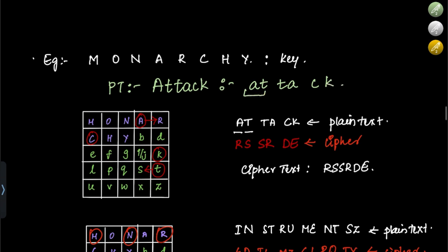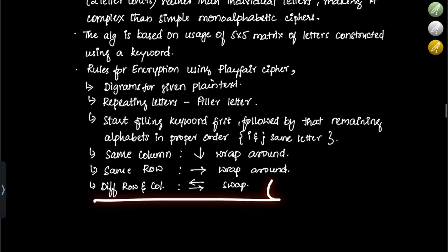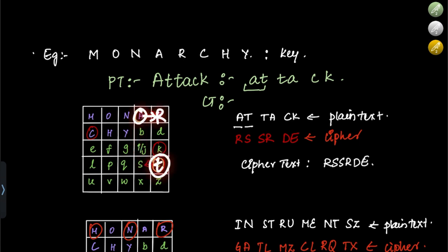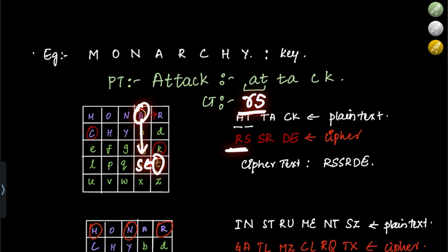For the pair A and T: A is here, T is here — they are not in the same row or column. So we apply the rectangle rule: for A, take the letter in the same row as A but the column of T, which is R; for T, take the letter in the same row as T but the column of A, which is S. So AT encrypts to RS.